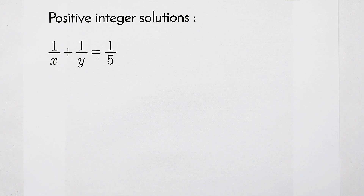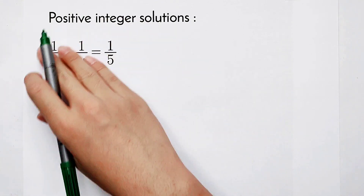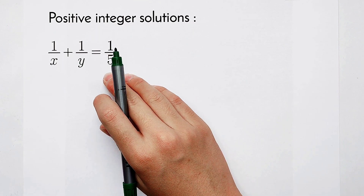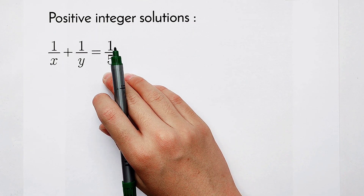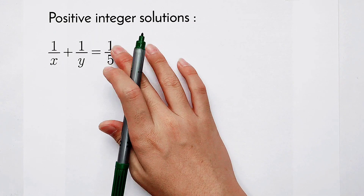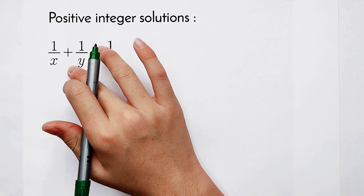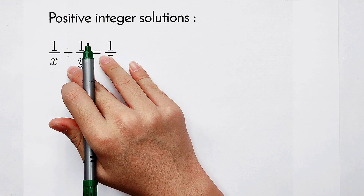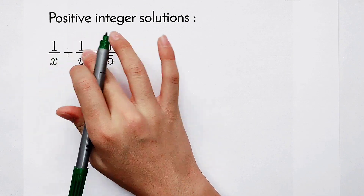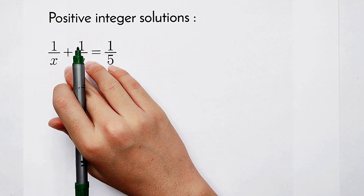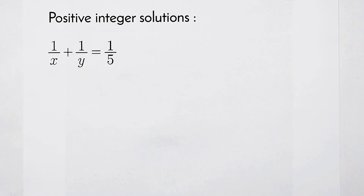Welcome back to Math We Know. Solve the positive integer solutions of this equation: 1 over x plus 1 over y is equal to 1 fifth. How to solve it? x and y are both in the denominators, and they're both positive integers.